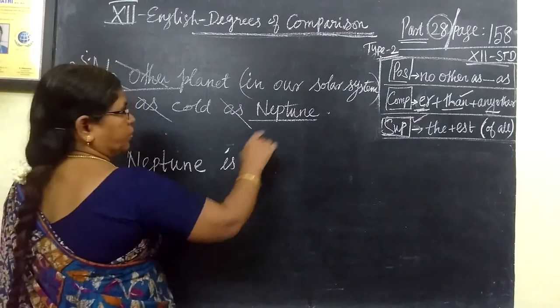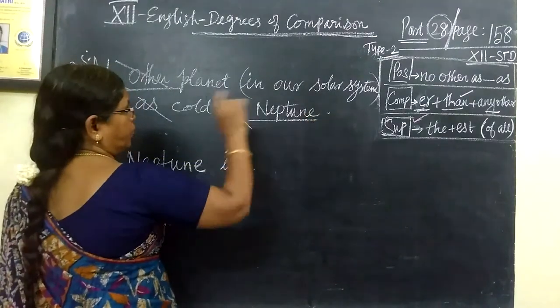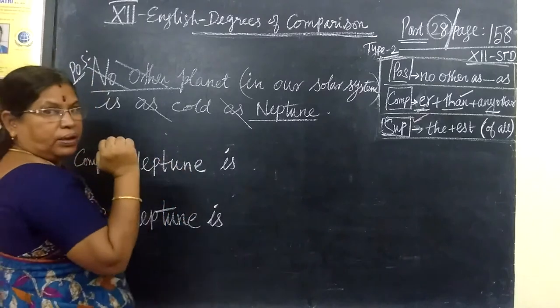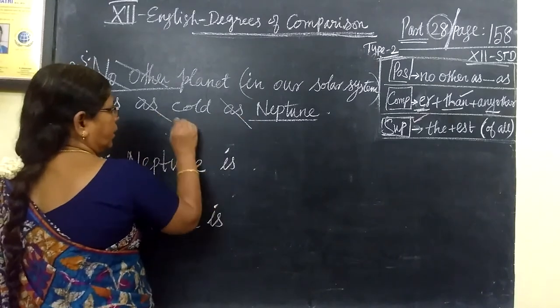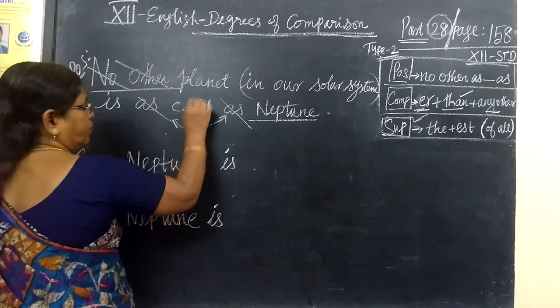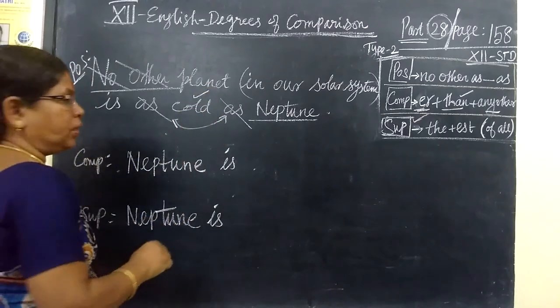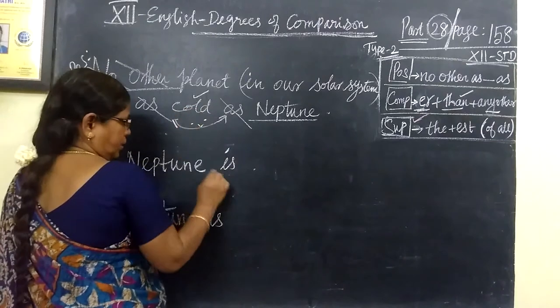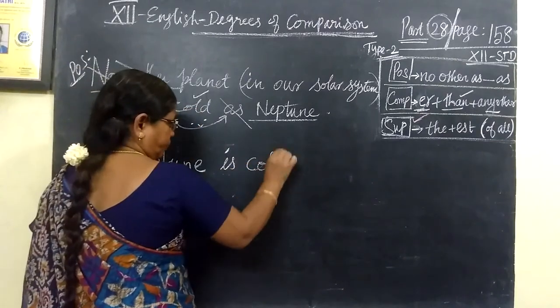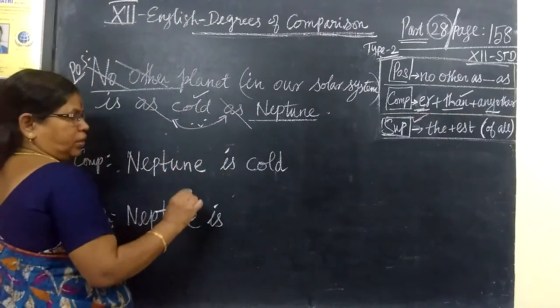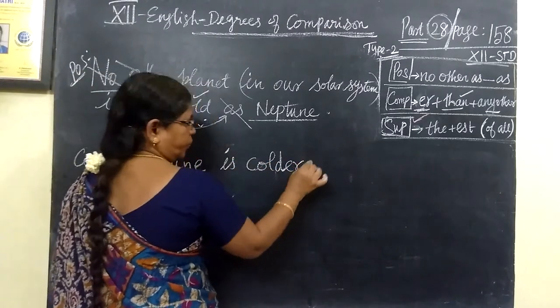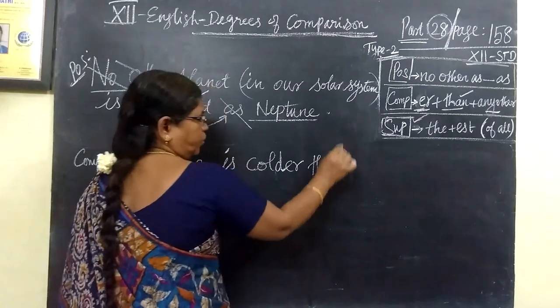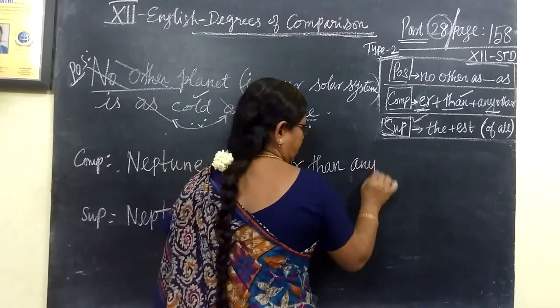Let's talk about this structure. Neptune is... in comparative form. Now we have to construct it. So next is 'any other.'